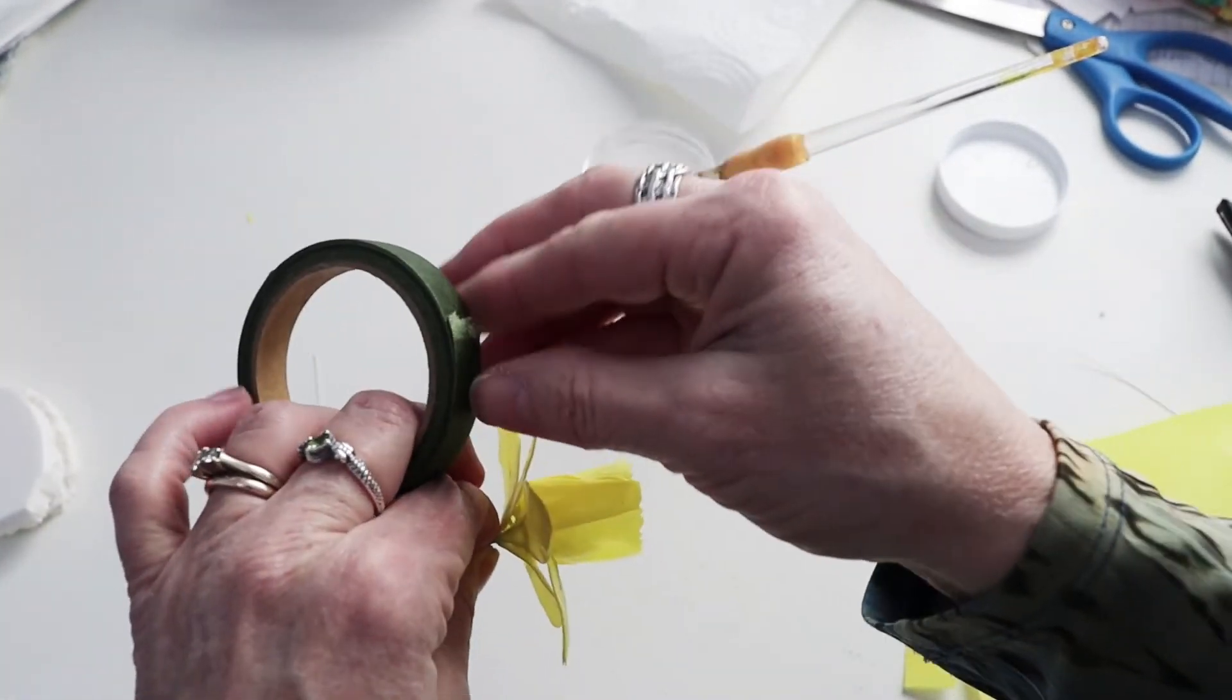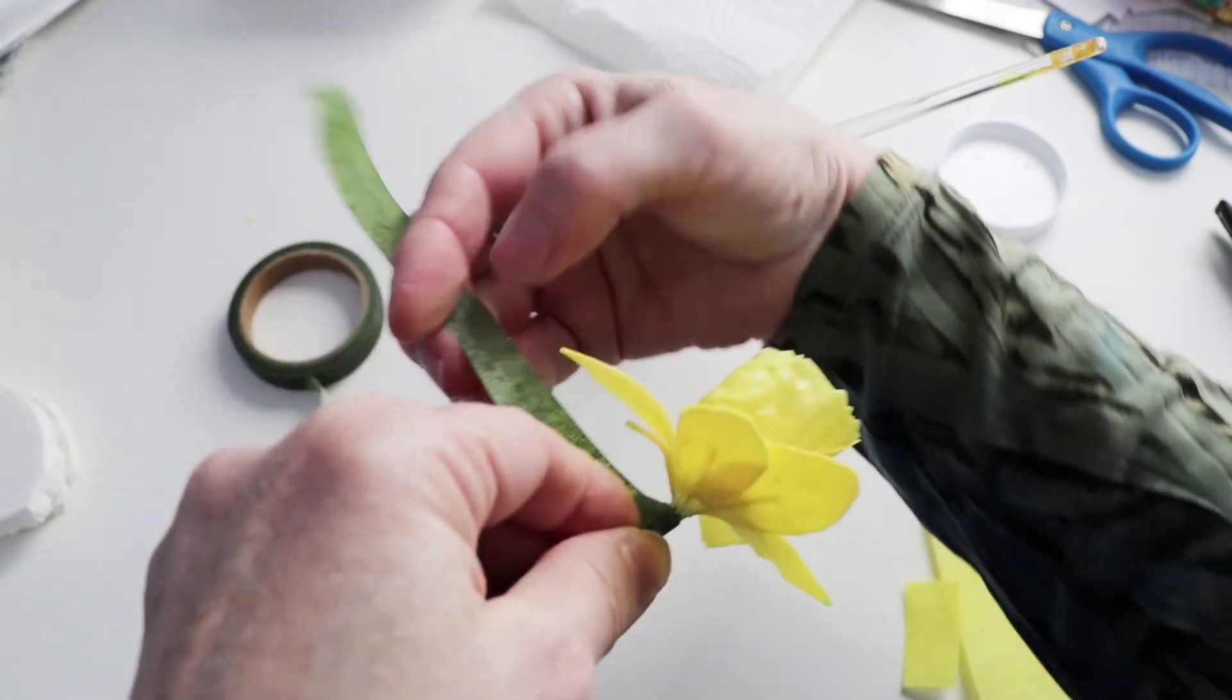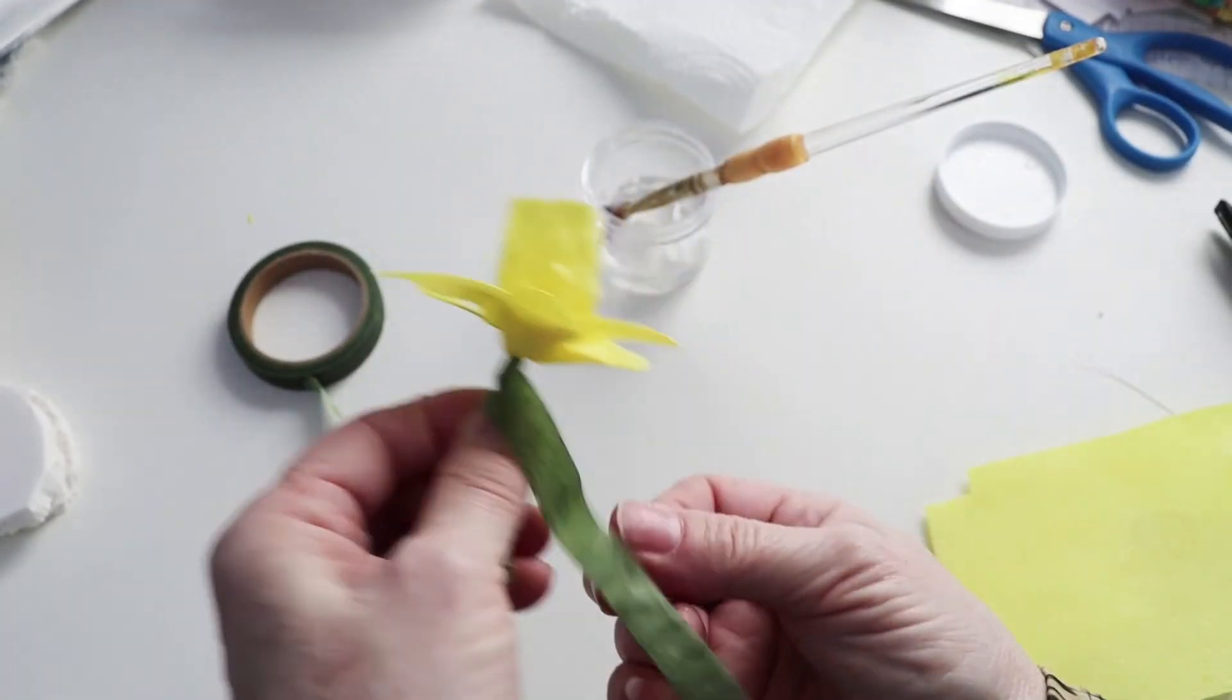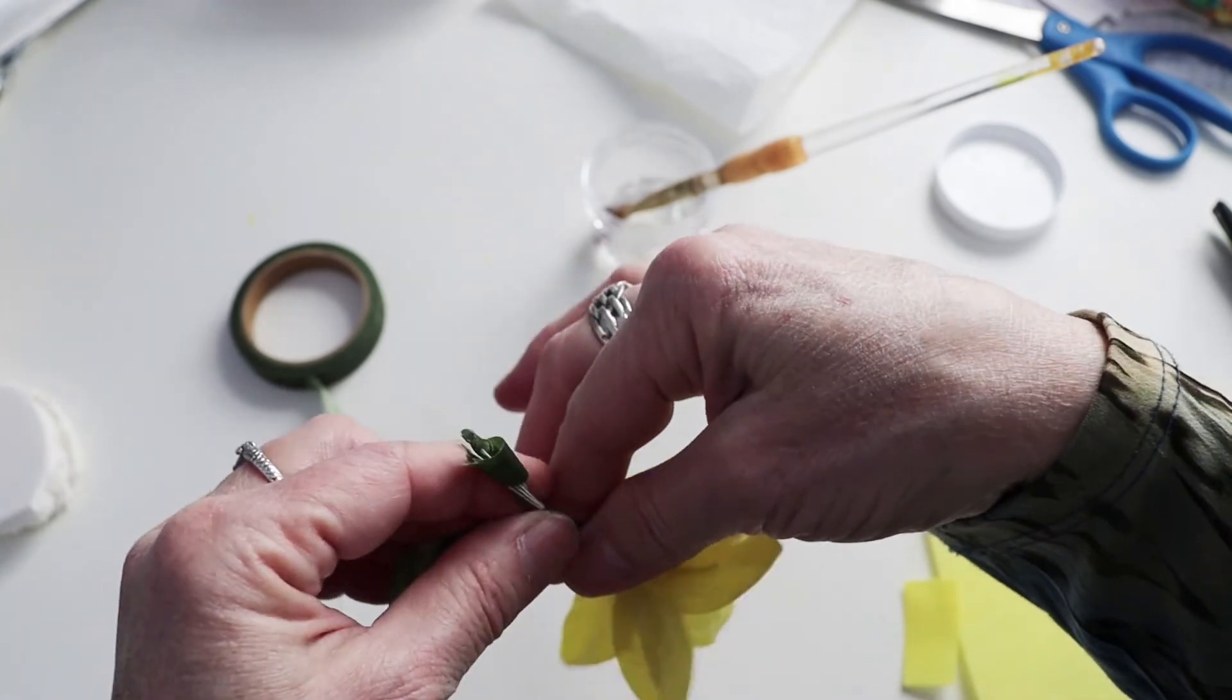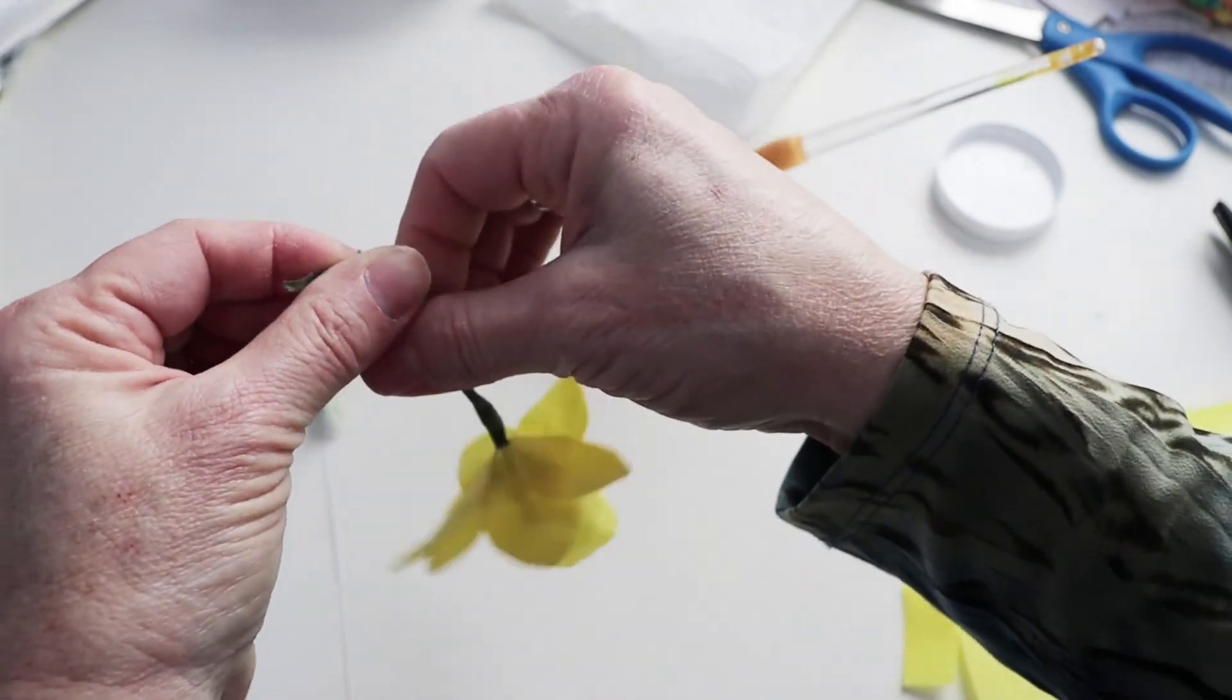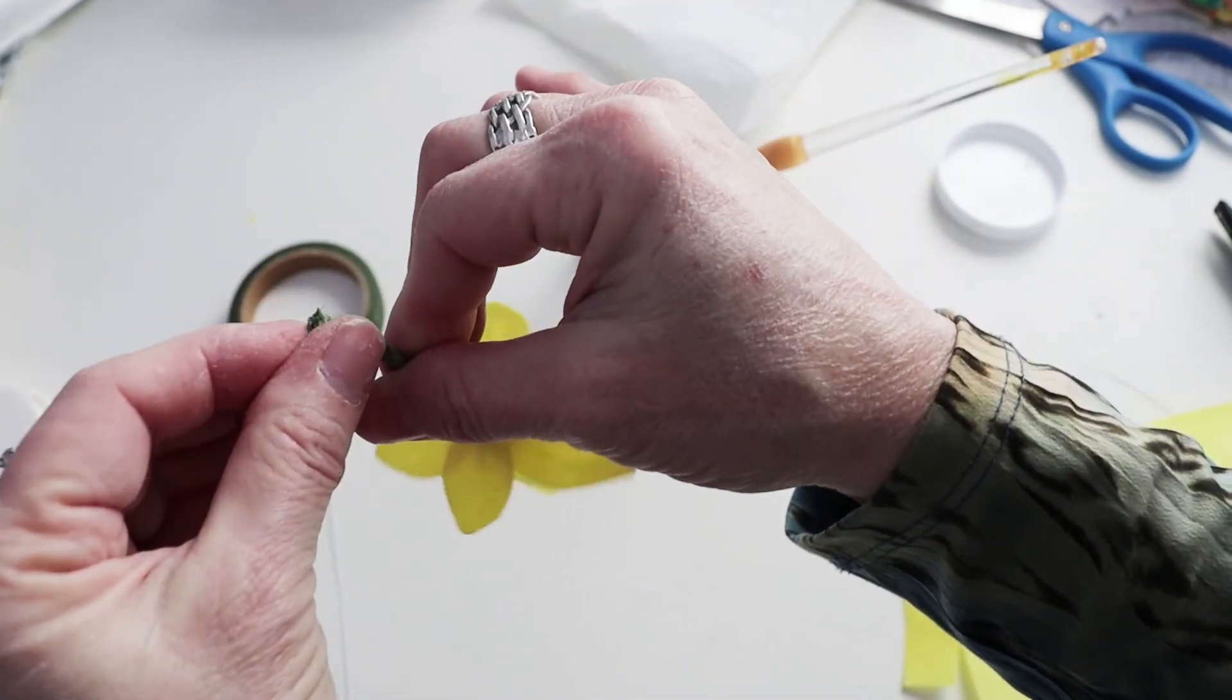And connect it all together. And like I said you could do this so that the stamens are wired and then you put the little bell around it and then you tape the petals onto it. So there's other ways to do it but this is how I did it this time. And this will just give you a little daffodil to use in some kind of a flower arrangement. So leave me any questions and I will answer them when I get a chance.